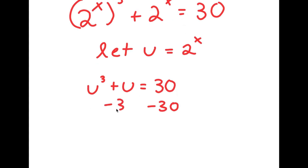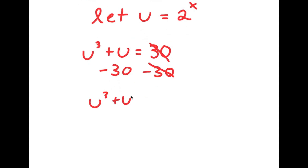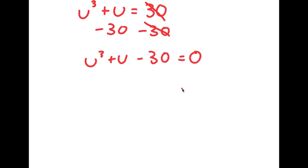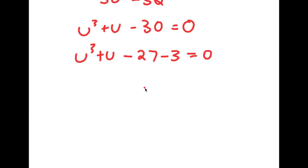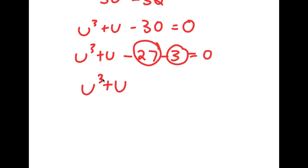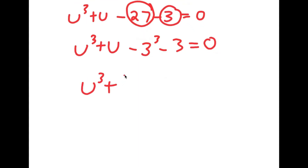Now I can subtract 30 on both sides, so I get u to the power of 3 plus u minus 30 equals 0. To find what value of u makes this equation equal to 0, I'm going to rewrite 30 as negative 27 minus 3. The reason is that 27 is the same thing as 3 to the power of 3. Notice we have u to the power of 3 plus u — we can think of u as 3 in this case. So I put this in the form u to the power of 3 minus 3 to the power of 3 plus u minus 3 equals 0.